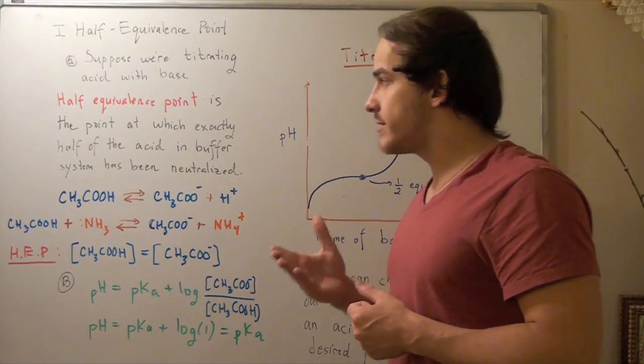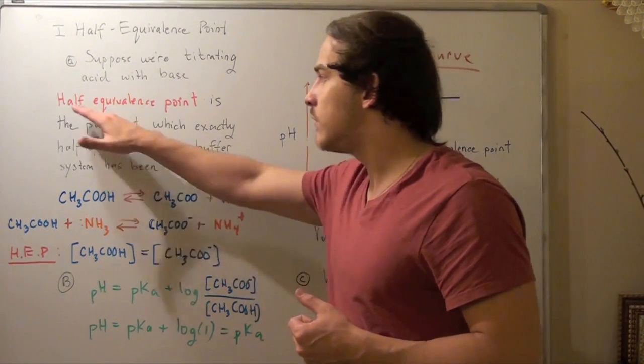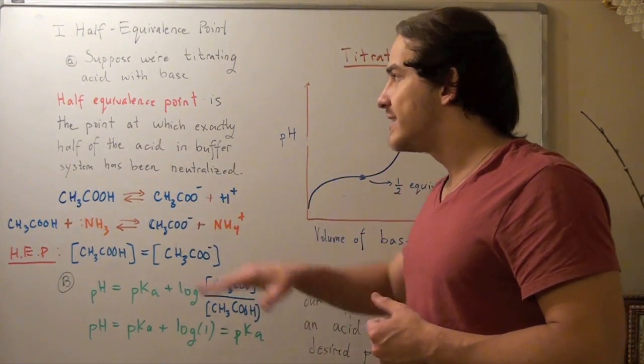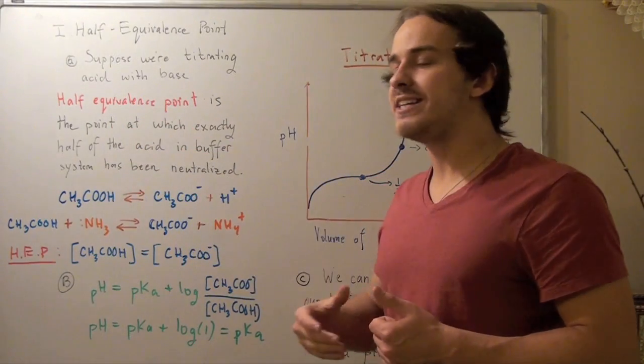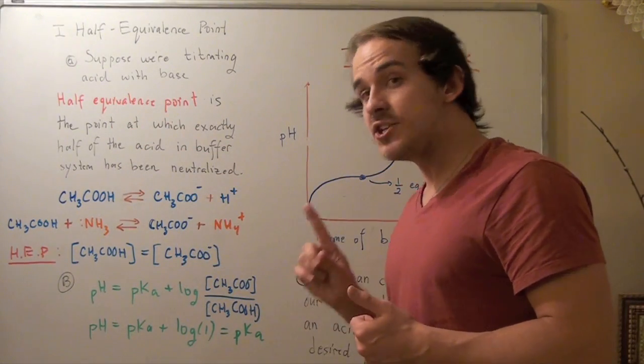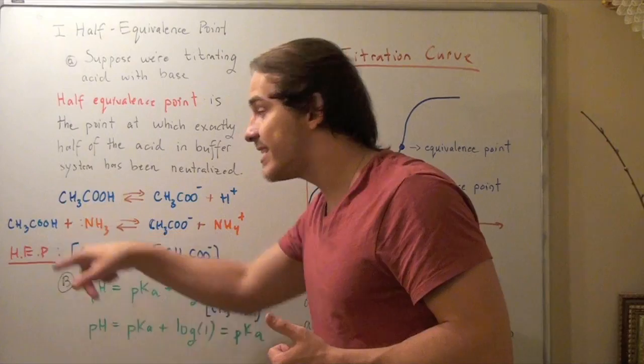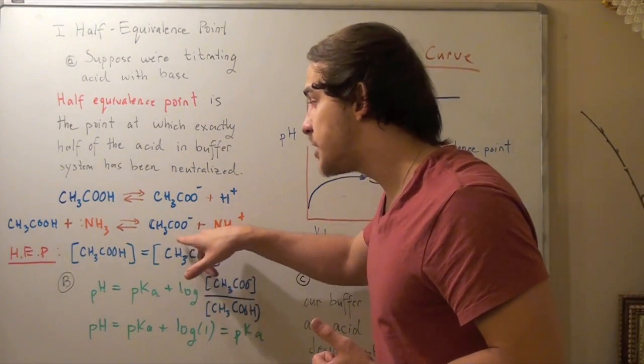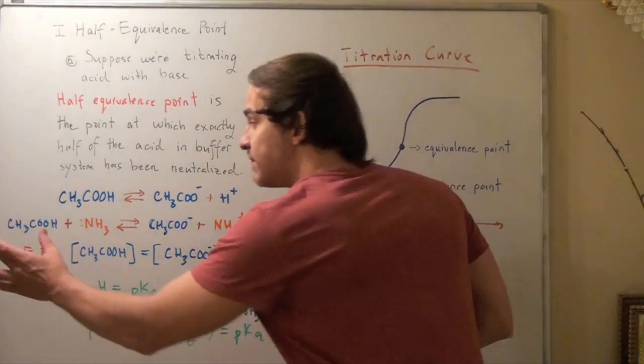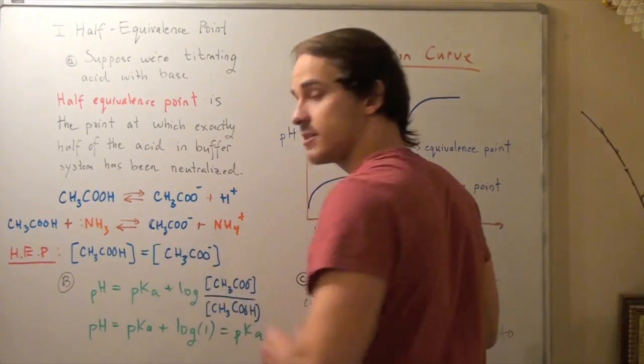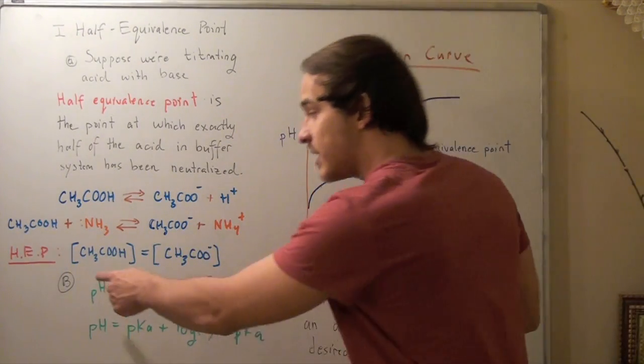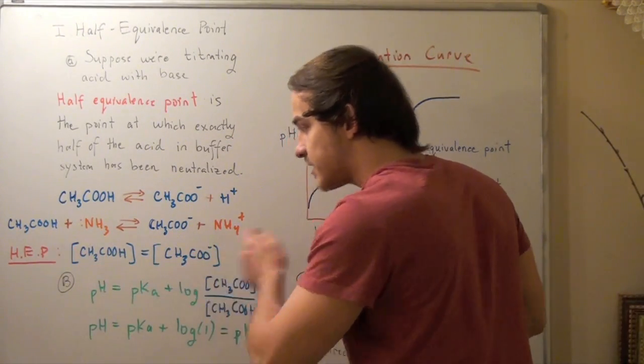So that means we can define the half-equivalence point in another way. The half-equivalence point is the point at which the concentration of the conjugate acid equals the concentration of the conjugate base. Because half of this is now this, so the concentration of this guy equals this guy.